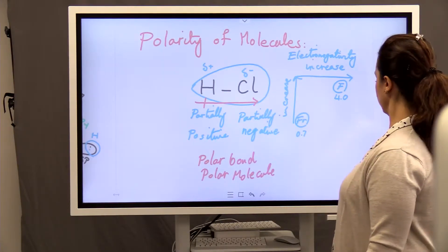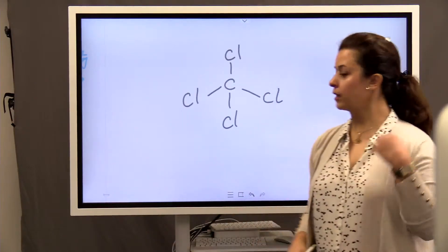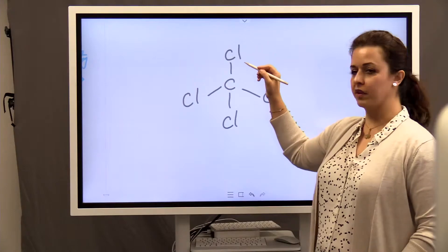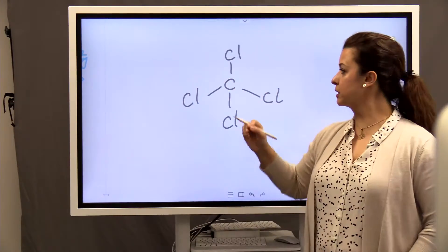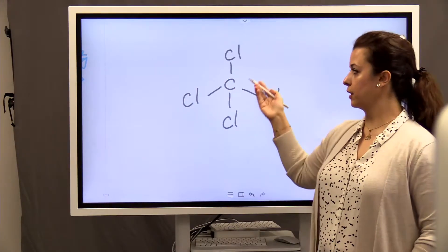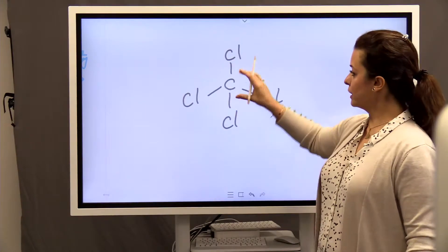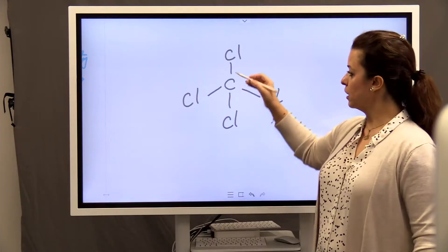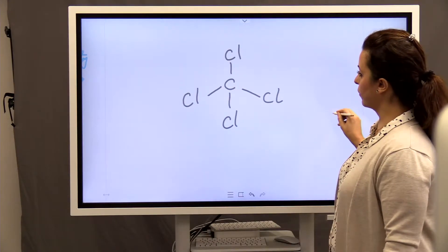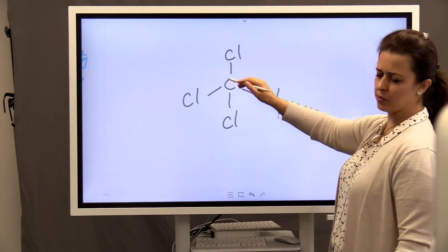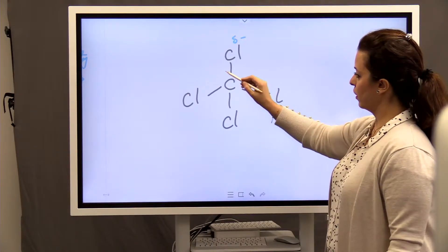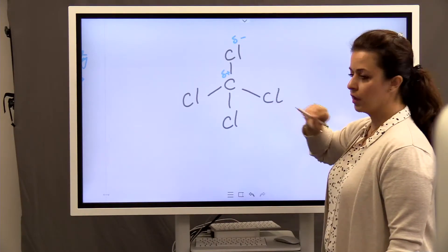But what if our molecule is larger, something like CCl4? We have to determine the polarity of each bond. The key is to draw a correct Lewis structure. So let's determine the polarity between carbon and chlorine. According to the trend, the polarity of carbon is more, I'm sorry, chlorine is more. So there is a partially negative on every chlorine.